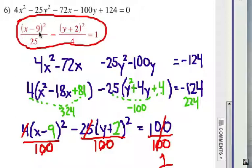That tells me that the center of the hyperbola is at 9 negative 2. And the A distance, horizontally going across, is 5. And the B distance, up and down, is 2.